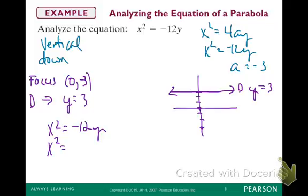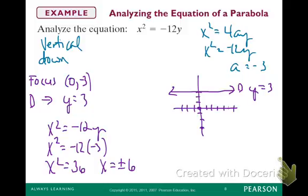It's negative 3. So we're going to do negative 12 times negative 3, which would be positive 36. So again, we're going to get x is equal to plus or minus 6. So that's on your x-axis. So plot those points. And then put in your parabola. We already have our directrix. Now we'll put in our parabola. Got it.